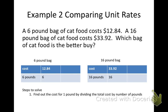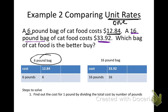This next example is a little different — we're going to compare a unit rate. A unit rate means per one. You have a six-pound bag of cat food that costs twelve dollars and eighty-four cents, and a sixteen-pound bag of cat food that costs thirty-three dollars and ninety-two cents. Which bag is a better buy? I have the charts already set up: cost and pounds for the six-pound bag, and cost and pounds for the sixteen-pound bag.